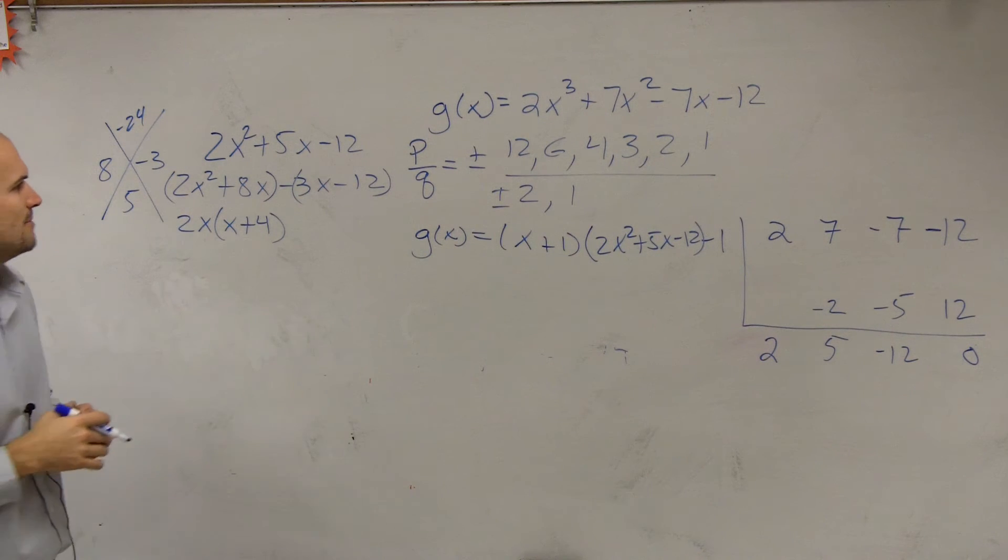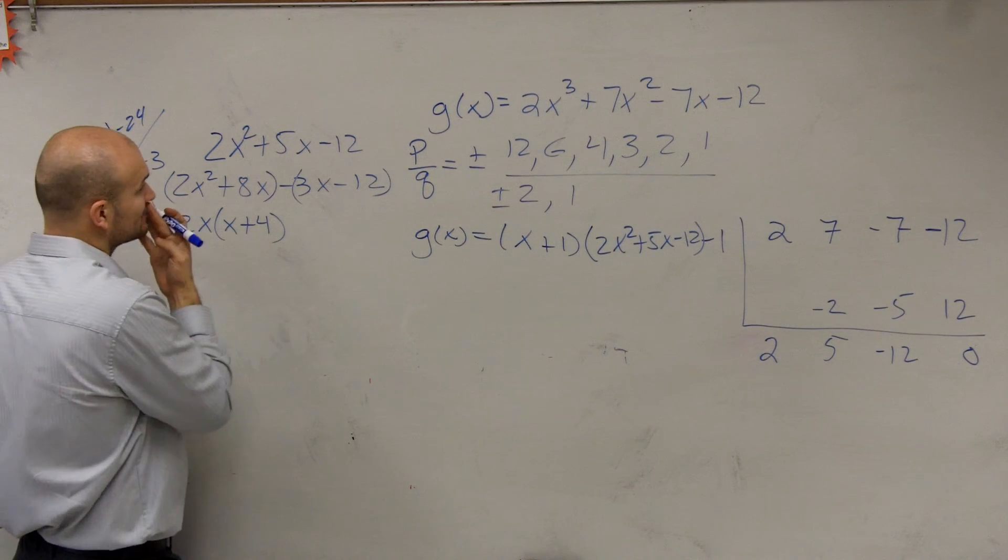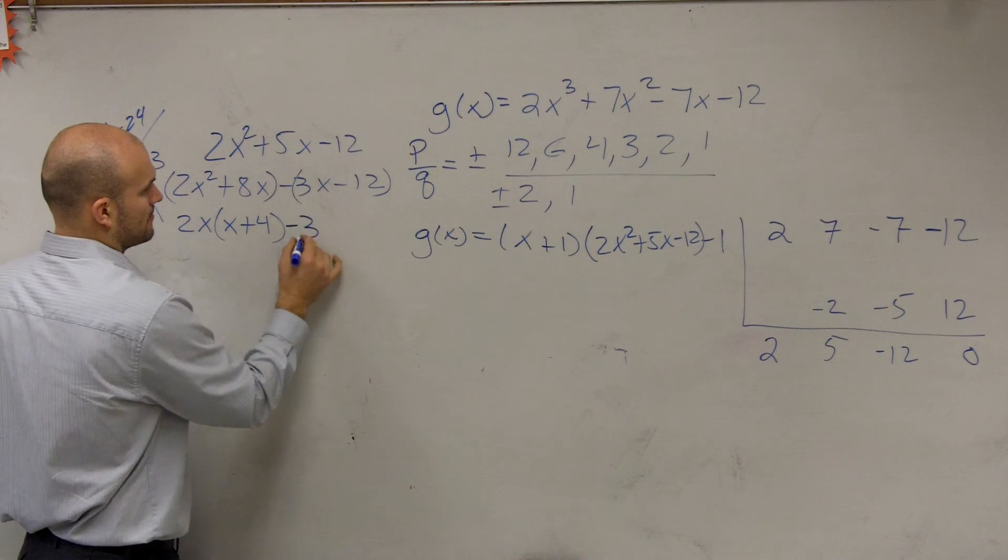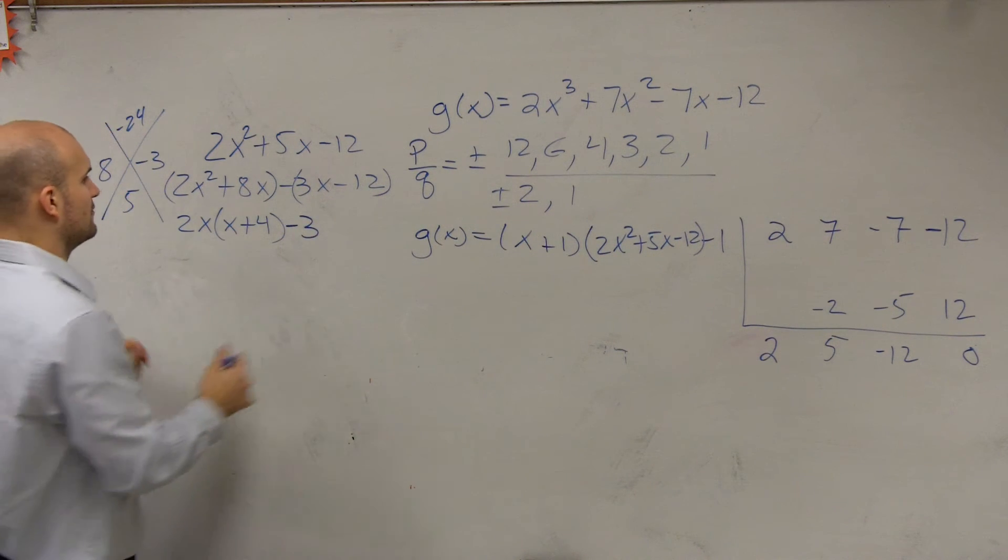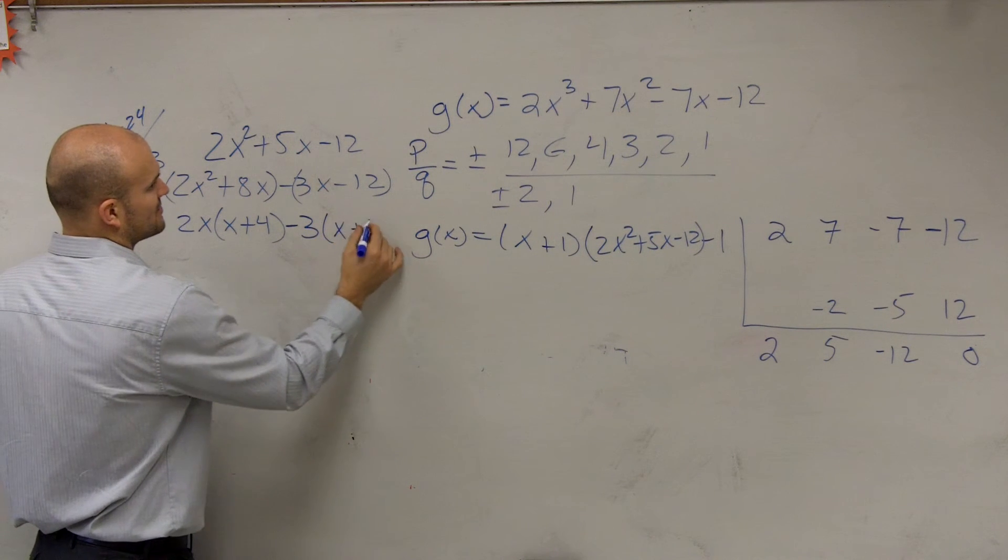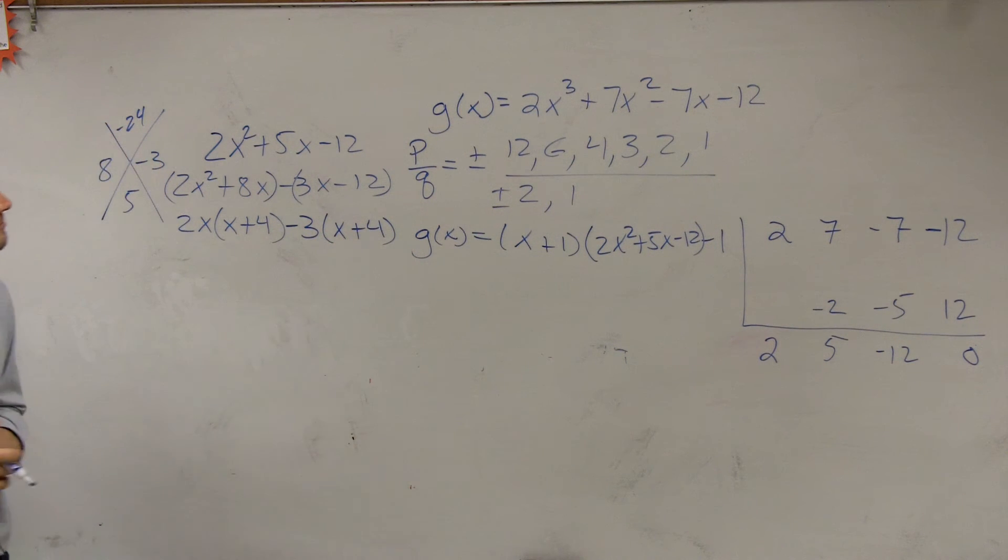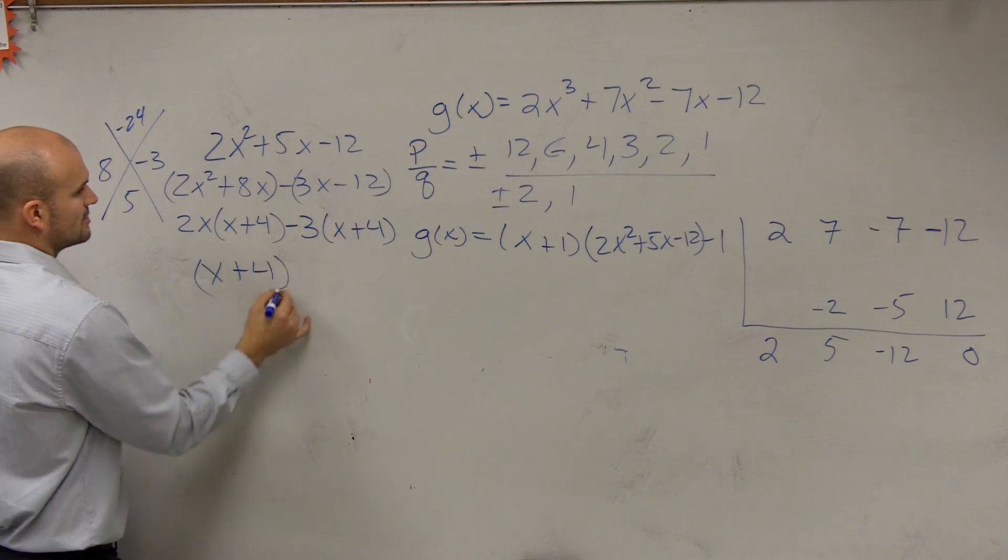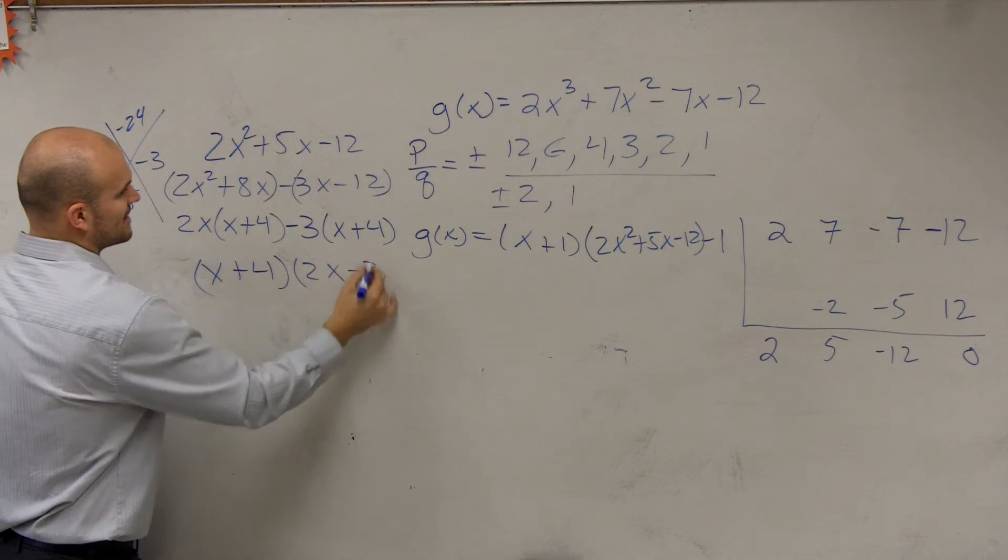Here, I can factor out a, let's factor out a negative 3. So when I factor out a negative 3, I'm going to be left with a x plus 4. So if I factor out a negative 3, now I'm going to leave it with x minus 4, x plus 4. So now I'm left with x plus 4 times 2x minus 3.